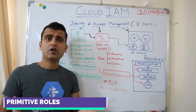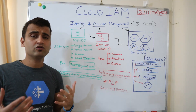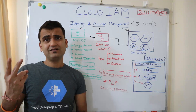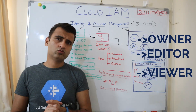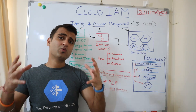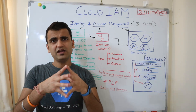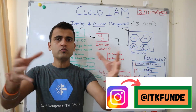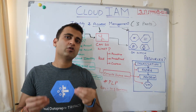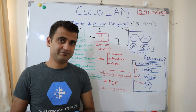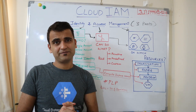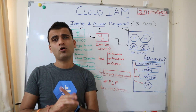The first is primitive roles. Primitive roles were there before IAM on Google Cloud — mainly three types: owner, editor, and viewer. Any user used to get one of these three roles, but these roles were very broad in nature. They used to open a Pandora's box and give so much access at one time that they violated the basic principle of security, which is PLP — the principle of least privileges. That means at any given point, you should give only the minimum amount of access required to anybody.